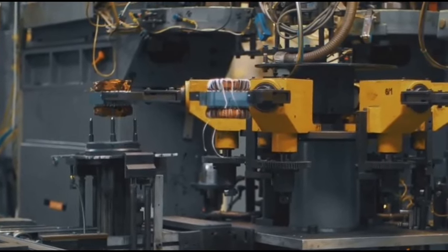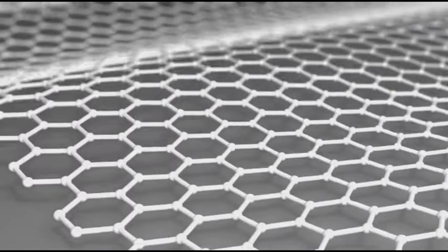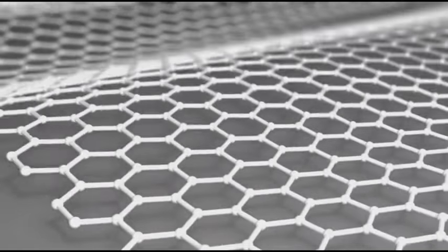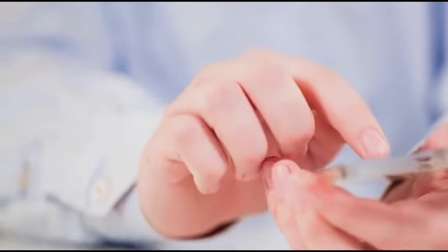But that's not all. Graphene is also transparent and flexible. This combination of properties opens up a world of applications. Imagine flexible yet durable smartphone screens or even electronic devices that can be folded up and carried in your pocket.